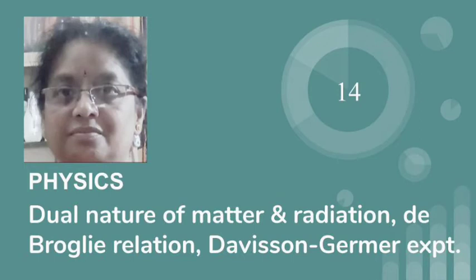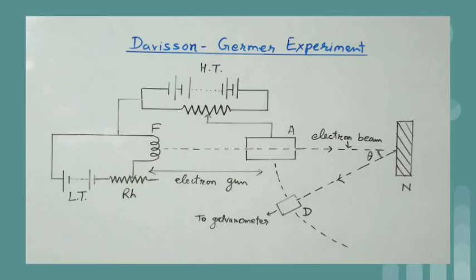The wave nature of electron was established experimentally by Davison and Germer in 1927. As you can see in the diagram, the apparatus consists of an electron gun in which there is a filament F of tungsten coated with barium oxide which is heated with current from low tension battery.